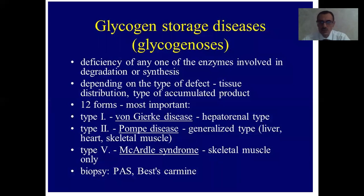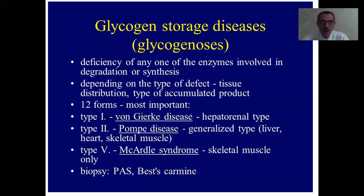Under glycogen storage diseases or glycogenoses, deficiency of any one of the enzymes involved in degradation or synthesis — depending on the type of defect, tissue distribution, and type of accumulated product — results in 12 important forms. Examples include Type 1: Von Gierke disease (hepatorenal type); Type 2: Pompe disease (generalized type, with liver, heart, and skeletal muscles involved); and Type 5: McArdle syndrome (affecting all skeletal muscles). We use biopsy methods and special histochemical methods — periodic acid-Schiff stain and Best's carmine — for detection of glycogen.